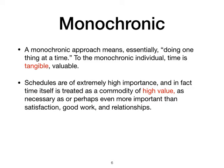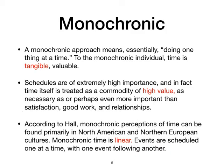Time is given much more importance — you think about time as money, in terms of good work and relationships. According to Edward T. Hall, the monochronic perception of time can be found primarily in North American and North European cultures, where time is linear. Events are scheduled one at a time, with one event following the other. It's sequential, not scattered — straightforward, one event at a time.